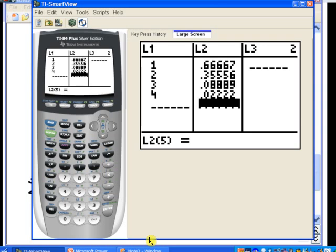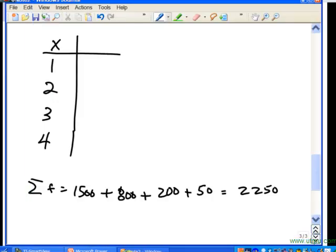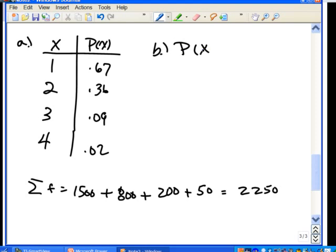So we can go ahead and put these values into our table. And so we could round those off to the nearest whole number, if we'd like. So let's go ahead and do that. So the probability values would be, I'll call them 0.67, 0.36, 0.09, and 0.02. All right. So there's part A, was to develop this probability distribution from this empirical data.